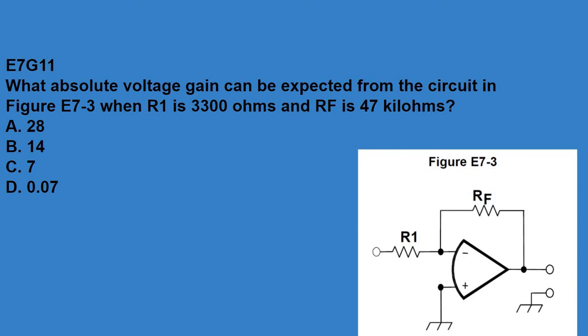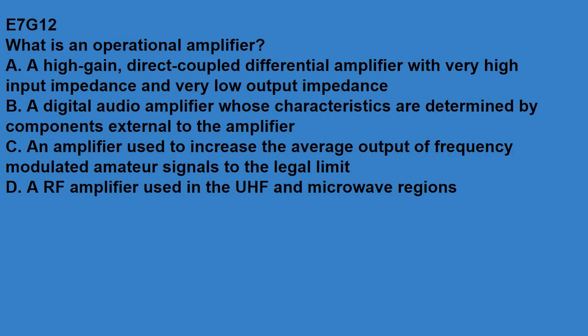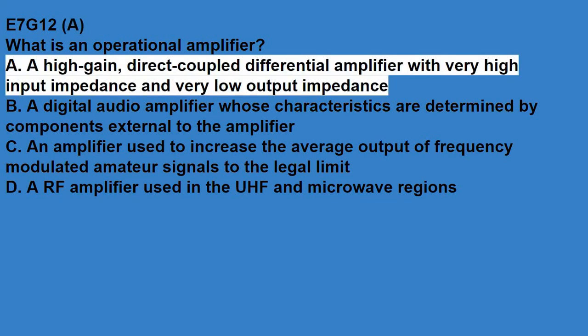E7G11, what absolute voltage gain can be expected from the circuit in figure E7-3 when R1 is 3,300 ohms and RF is 47 kilo ohms? Answer is 14. E7G12, what is an operational amplifier? A high gain, direct coupled differential amplifier with very high input impedance and very low output impedance.